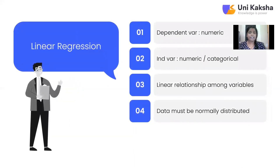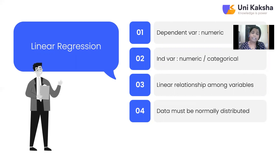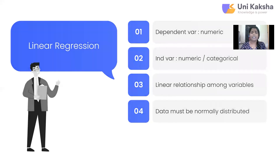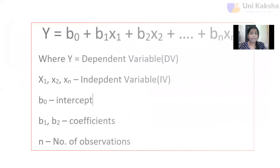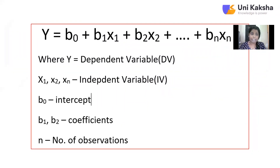For linear regression, your y variable (output or dependent variable) is continuous in nature. Your x variable (input or independent variables) are numerical or categorical in nature. Your variables should have a linear relationship — meaning your input variables must be linearly dependent on your output variable. Also, data should be normally distributed, so there should not be any skew present in your data. These are some of the things you have to consider before implementing linear regression on your data.